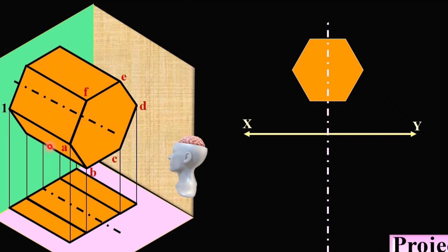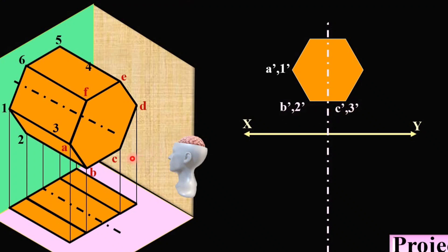Give names to the bottom corner points as well: 1, 2, 3, 4, 5 and 6. If you see in the front direction, A and 1 are on the same point, so it will be A-dash 1-dash. Similarly, B and 2 are on the same point — B-dash 2-dash. Likewise, C-dash 3-dash, D-dash 4-dash, E-dash 5-dash, and F-dash 6-dash. Since this is the front view, all names should be written with a dash and in small letters.